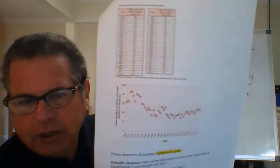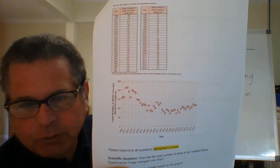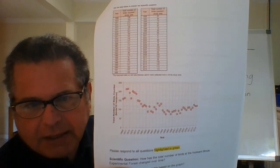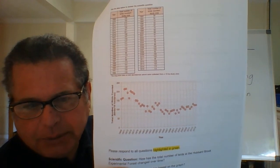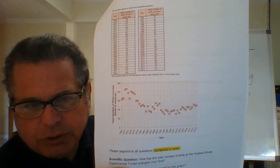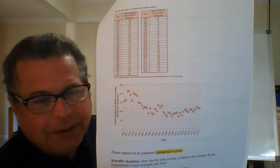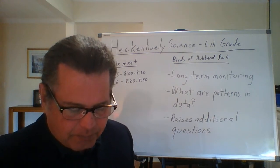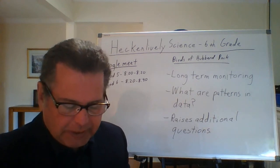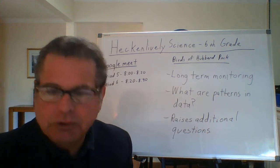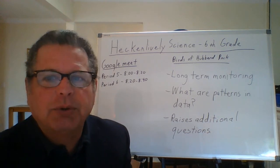The reason graphs are really helpful is that they can show you that decline. You can see how bird populations seem to be extremely low several years ago — they've kind of come back up, but they're not back to their historic levels. When you get to the questions, the independent variable would be the years, and the dependent variable would be the number of birds.